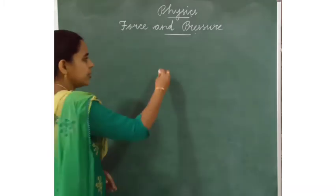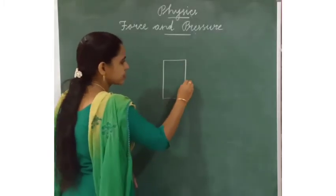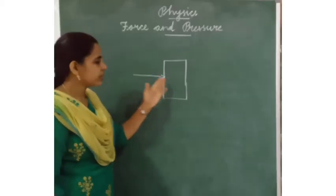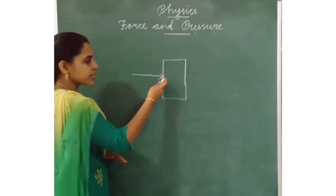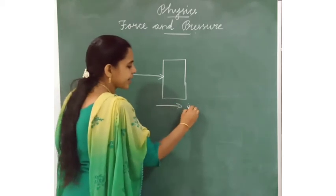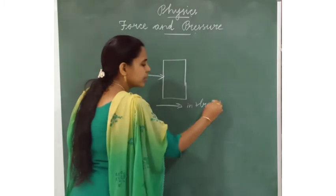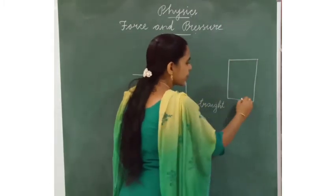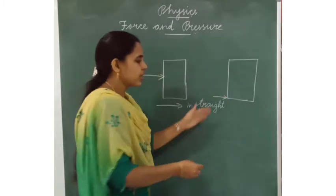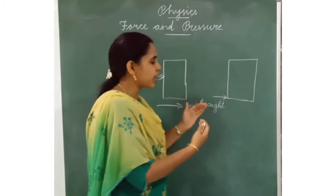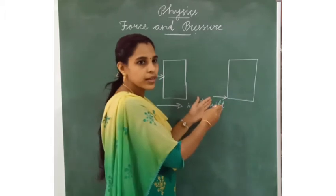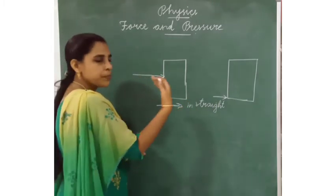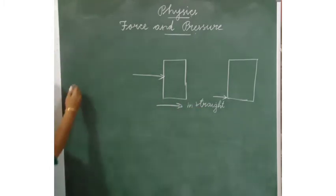That is called force. This is the book. When we give the force at the center of the book, the book will move in a straight line. But if we give the force at the end or any one side of the book, the book will rotate because we are applying the force at the end of the book. When we apply the force at the center of the book, the book will move in a straight line.